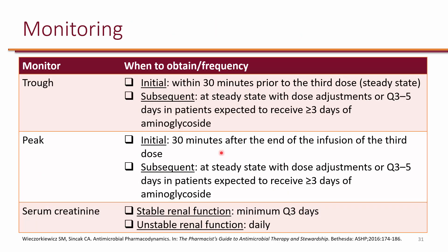When it comes to monitoring, we want to monitor both trough and peak. The trough should be drawn within 30 minutes prior to the third dose, as that is close to steady state. Assuming the level is at goal, you then get the trough every 3 to 5 days in patients with stable renal function, with more frequent monitoring required depending on clinical and renal status. Trough monitoring is for safety. For peak monitoring — which is for efficacy — you want to draw it at least 30 minutes after the end of the infusion to allow distribution to the tissues.